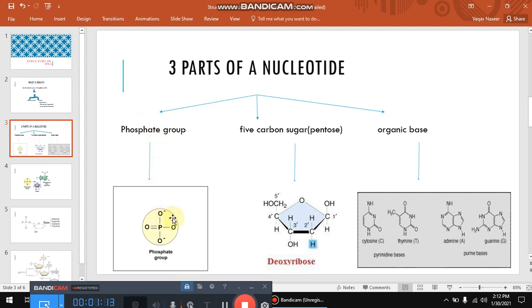You can see in this picture that phosphate group is composed of one phosphorus which is attached with four oxygen atoms. Another is the five carbon sugar. You can say that's the pentose sugar.